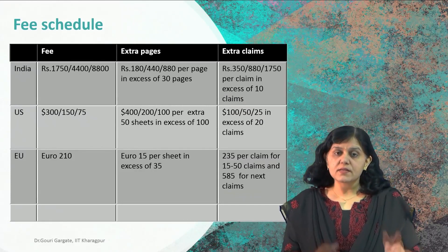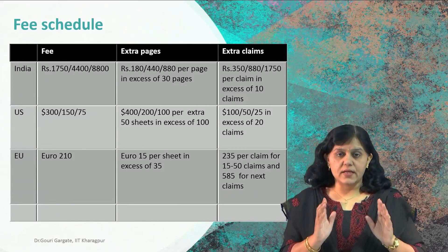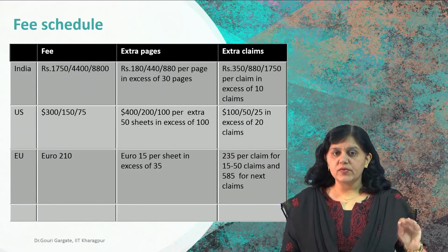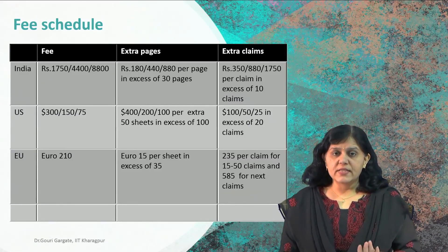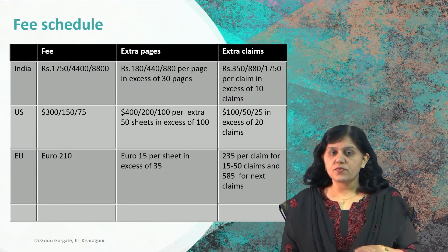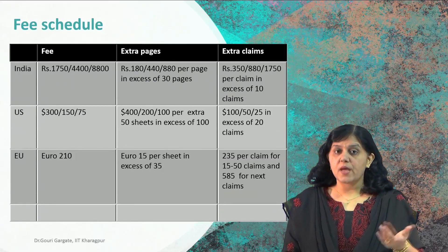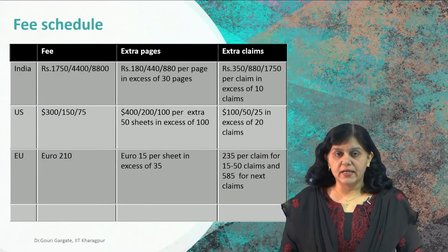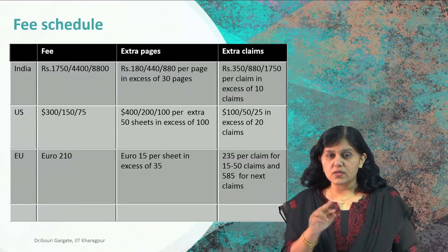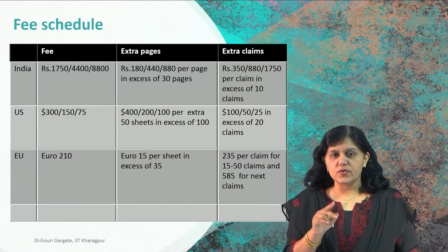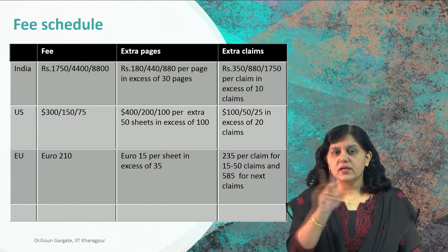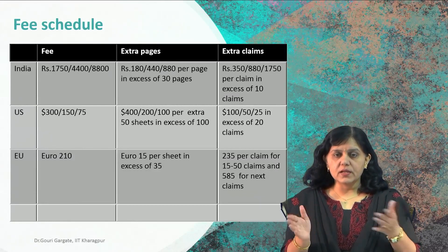What about MSME? If an MSME wants to file a patent, they have to pay 4,400 rupees. So a patent application by a startup or individual is just 1,750 rupees; if it is an MSME, it is 4,400 rupees. What about others — big organizations, MNCs? They have to give a fee of 8,800 rupees. You can see the fee difference: almost a 1-to-4 ratio. The difference between individual and others is significant, with doubling steps between categories.